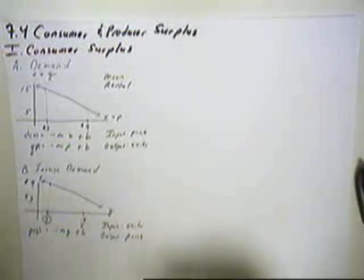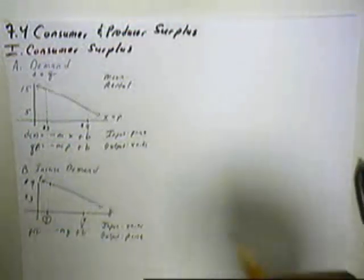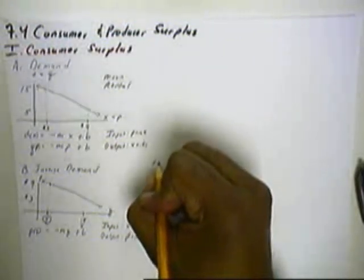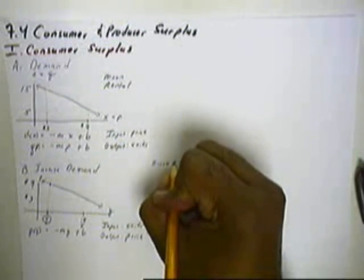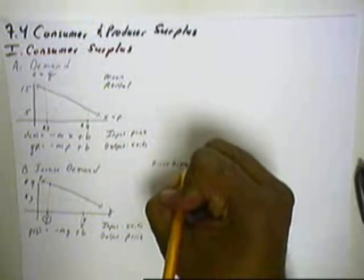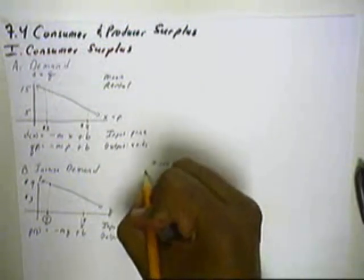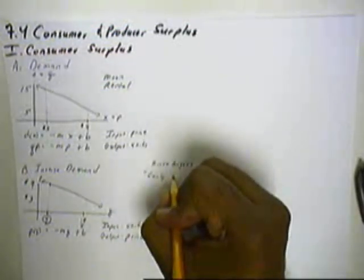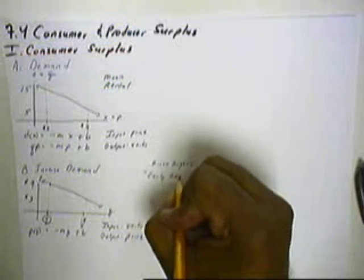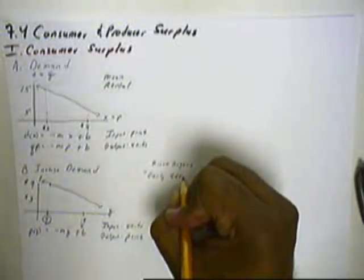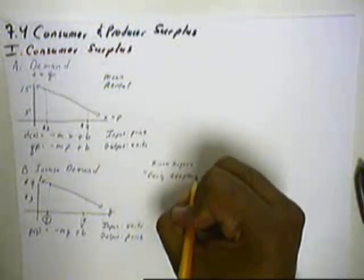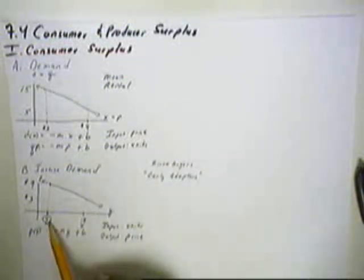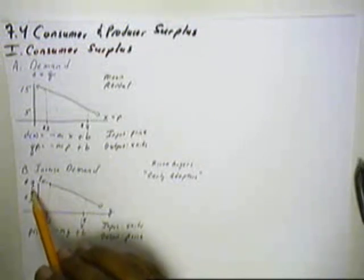The people that are buying these products, these are our first buyers. They're also called the early adopters. They buy your product when there's only a few out there and it's new at no matter what price that you give.